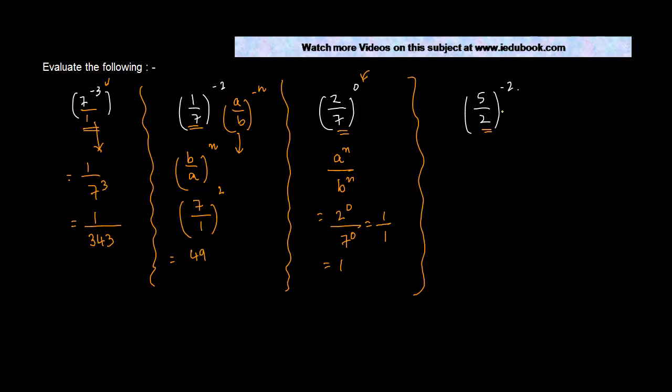Right, let's see the last question. It's a upon b to the power minus n. So this would be b which is two upon a which is five to the power n, or two upon five into two upon five, four upon twenty-five. Or simply you could have written two square upon five square, four upon twenty-five.